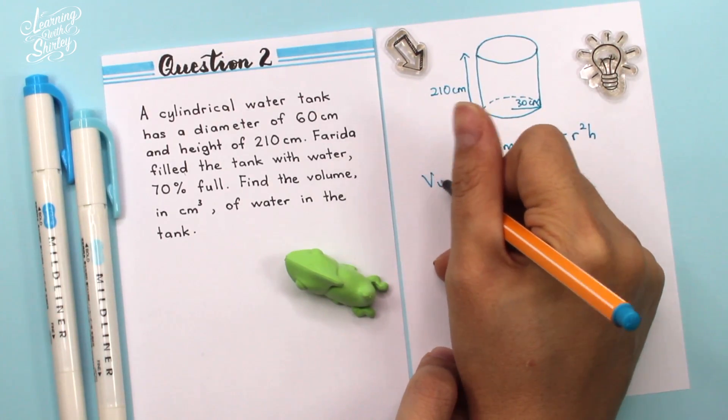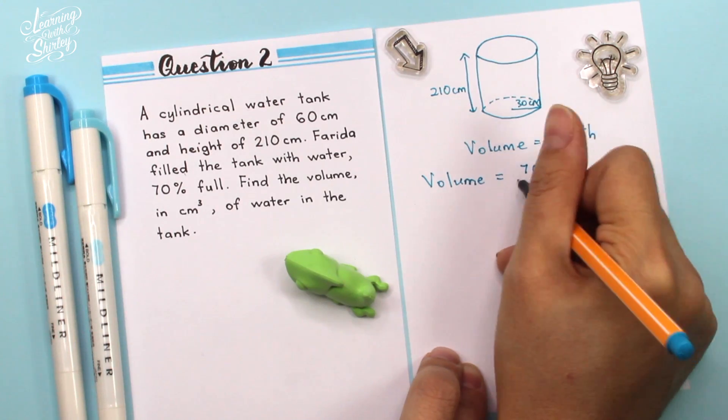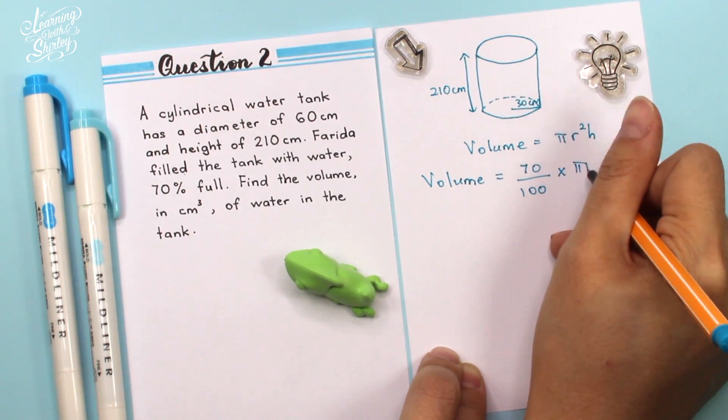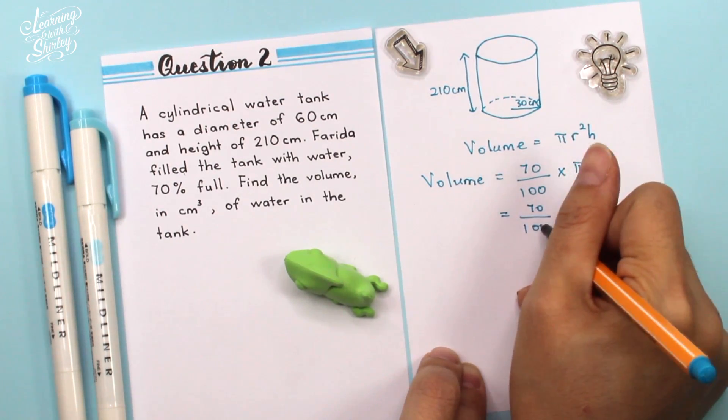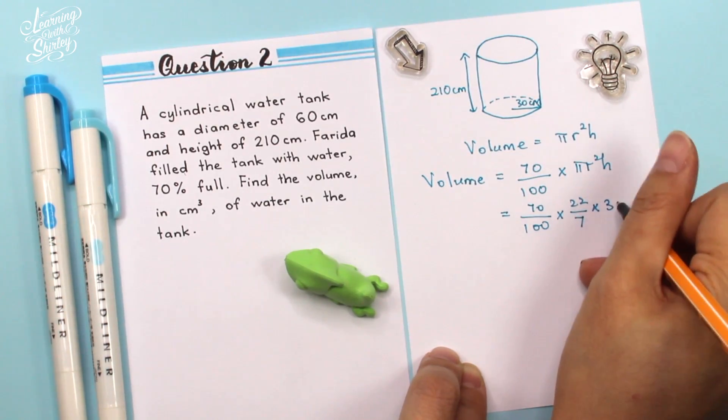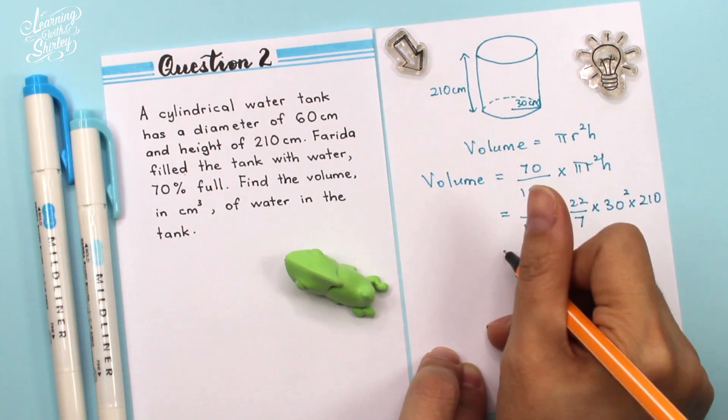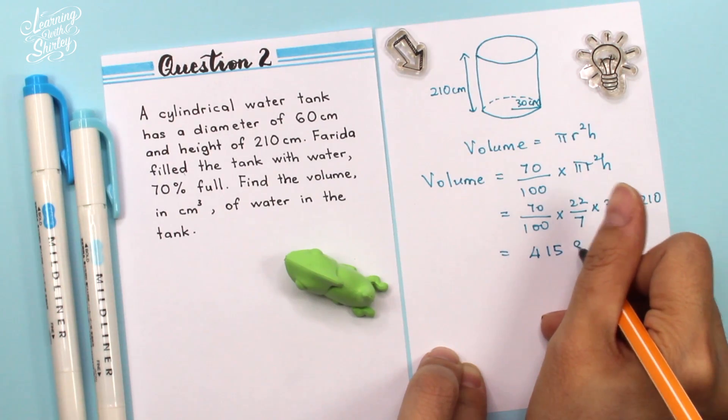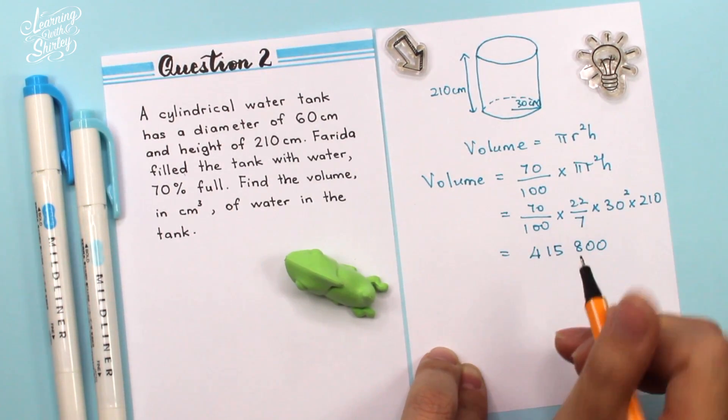Next I'm going to find the volume by substituting the values into this formula which is pi r square h. So to find a volume which is 70% full, we need to multiply by 70 over 100 times with pi r square h. So 70 over 100 times pi is 22 over 7. R is 30, so 30 square. And h is 210. And then we use the calculator to calculate this. We'll get 415,800.